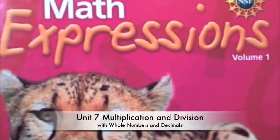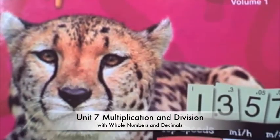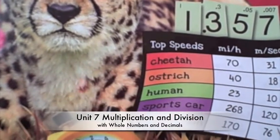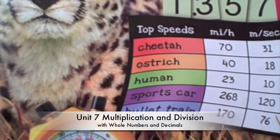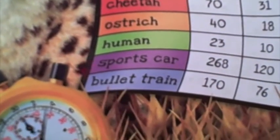Unit 7, Multiplication and Division with Whole Numbers and Decimals. The main goal of this unit is to enhance skills in multiplying and dividing with whole numbers and decimal numbers.